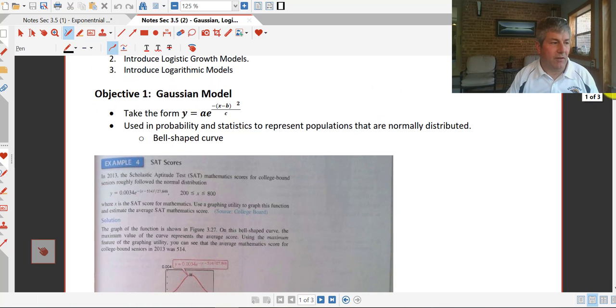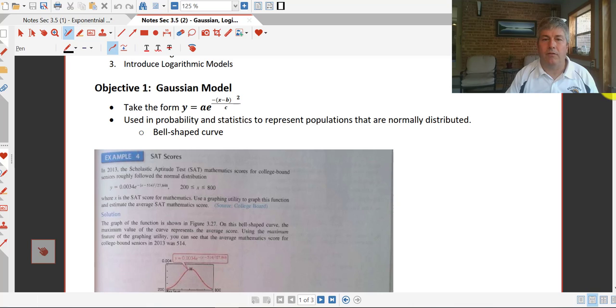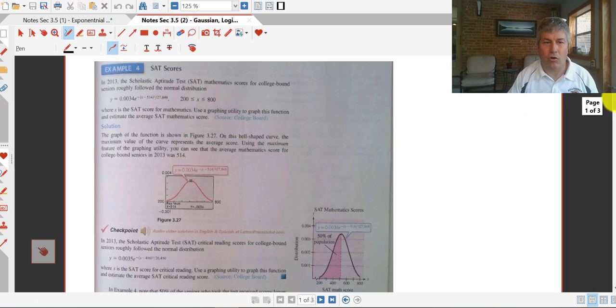As we saw previously, the Gaussian model is essentially our bell-shaped curve. It's used frequently in probability and statistics to represent populations that are normally distributed, so that normal distribution curve.